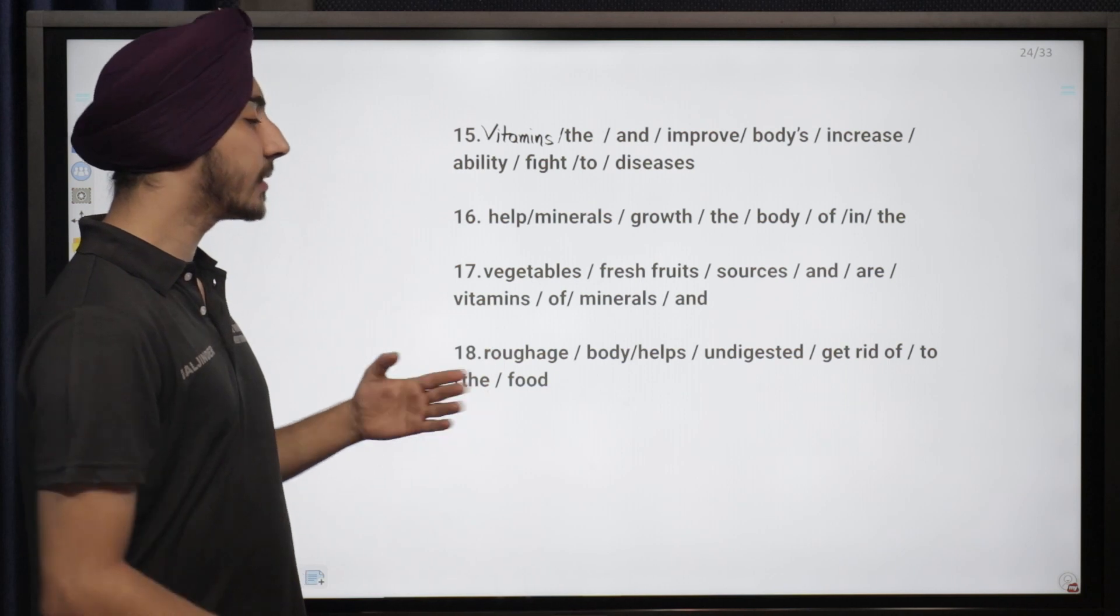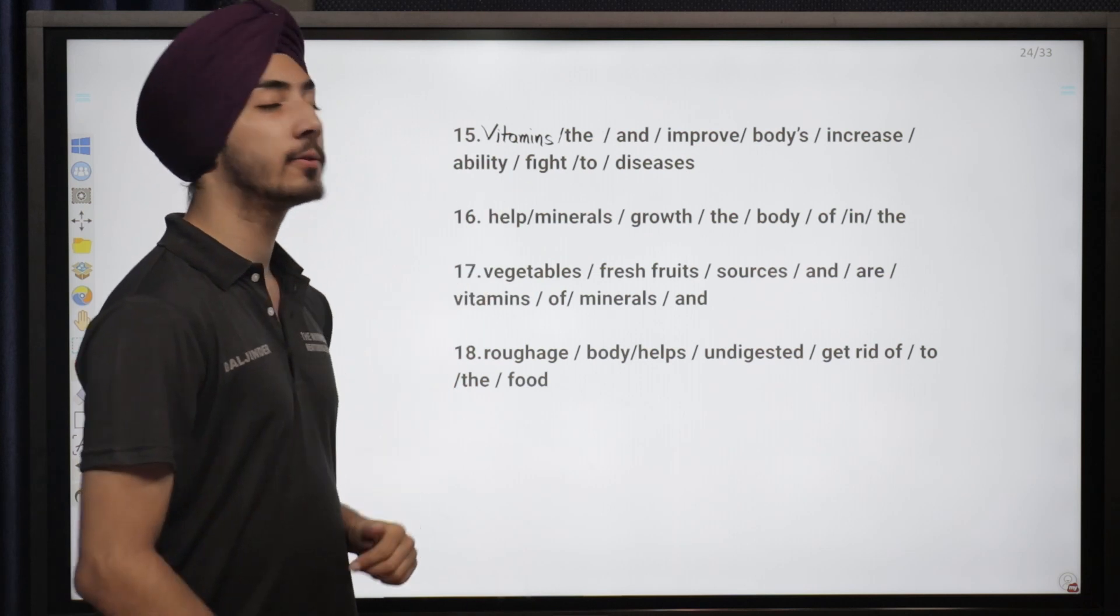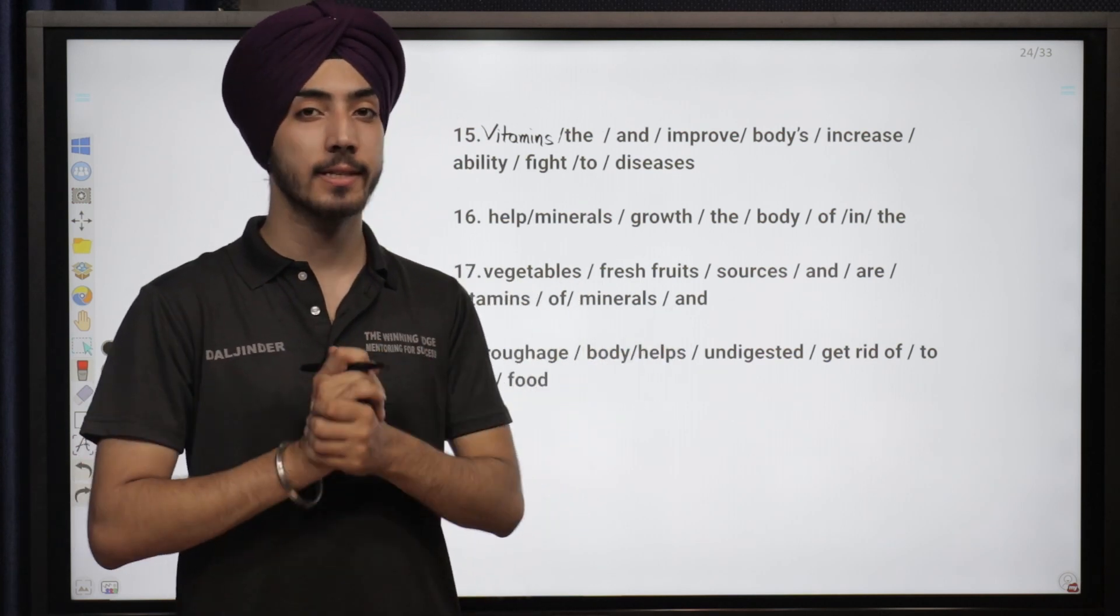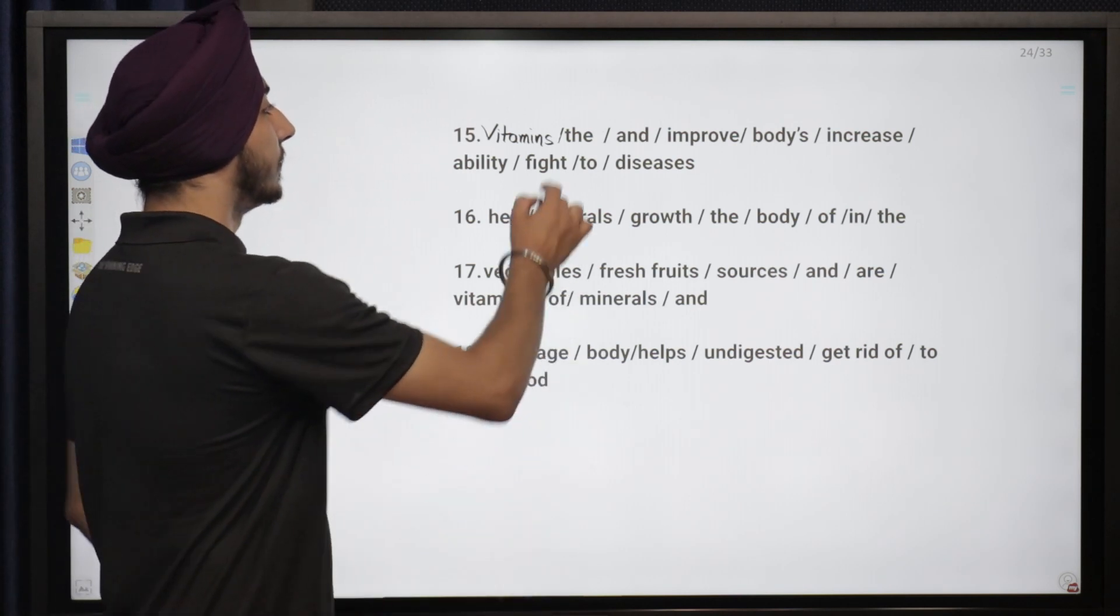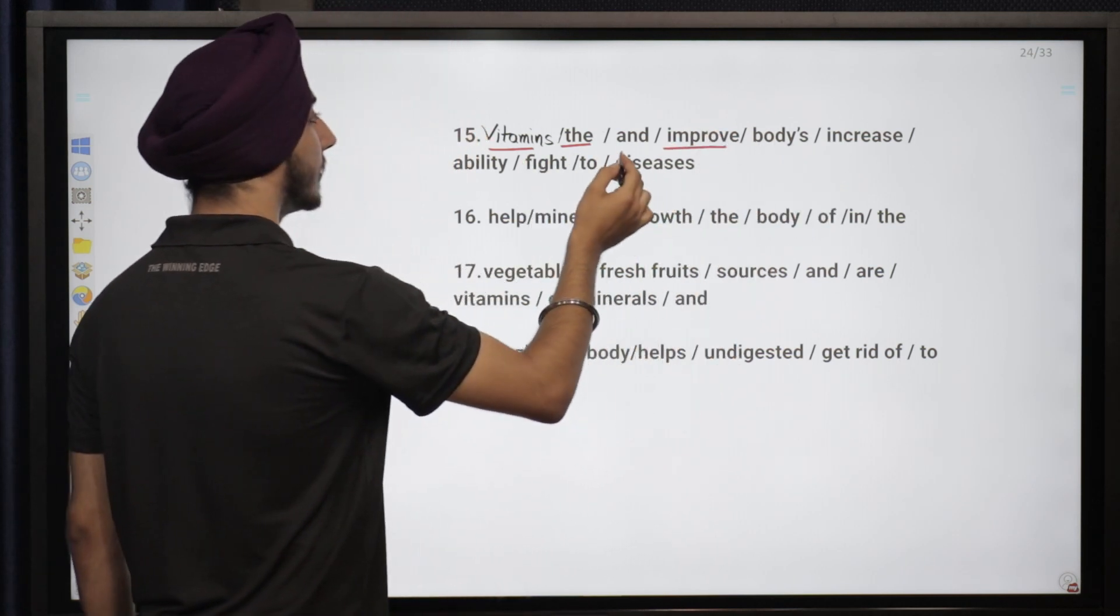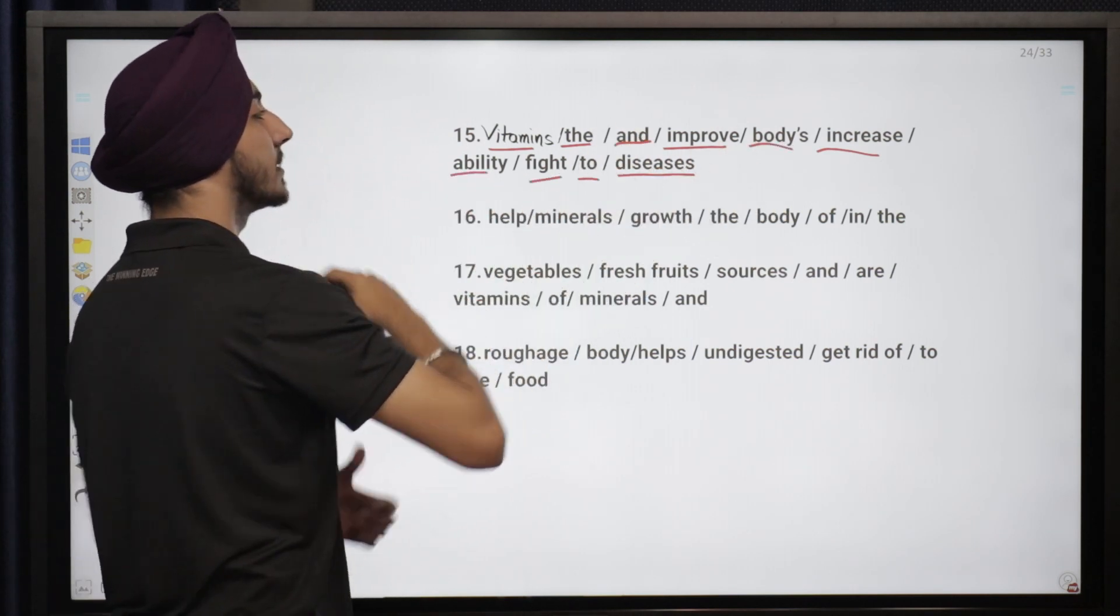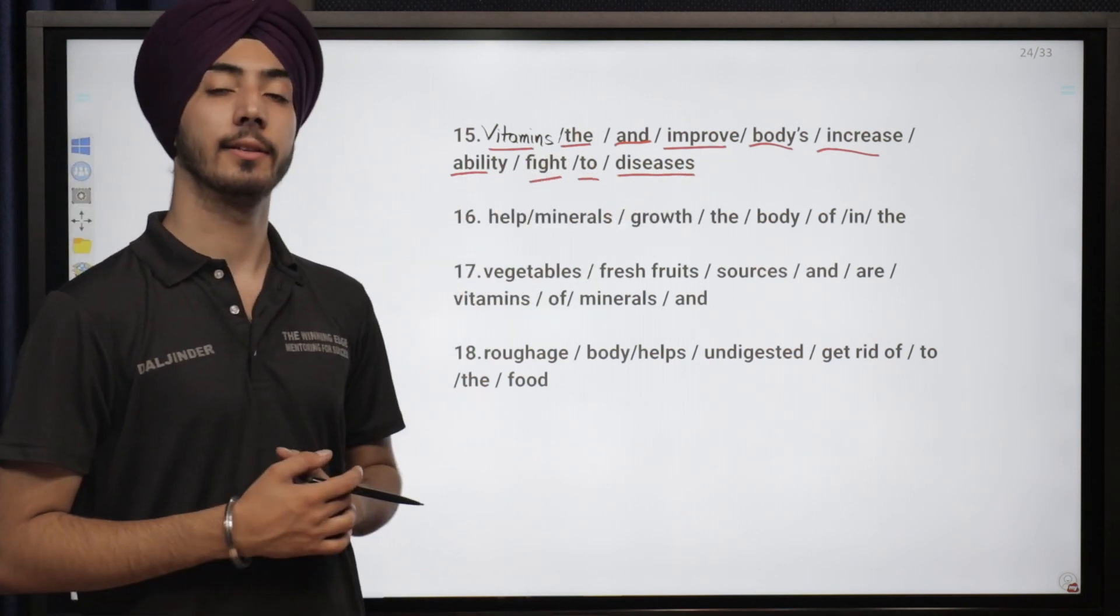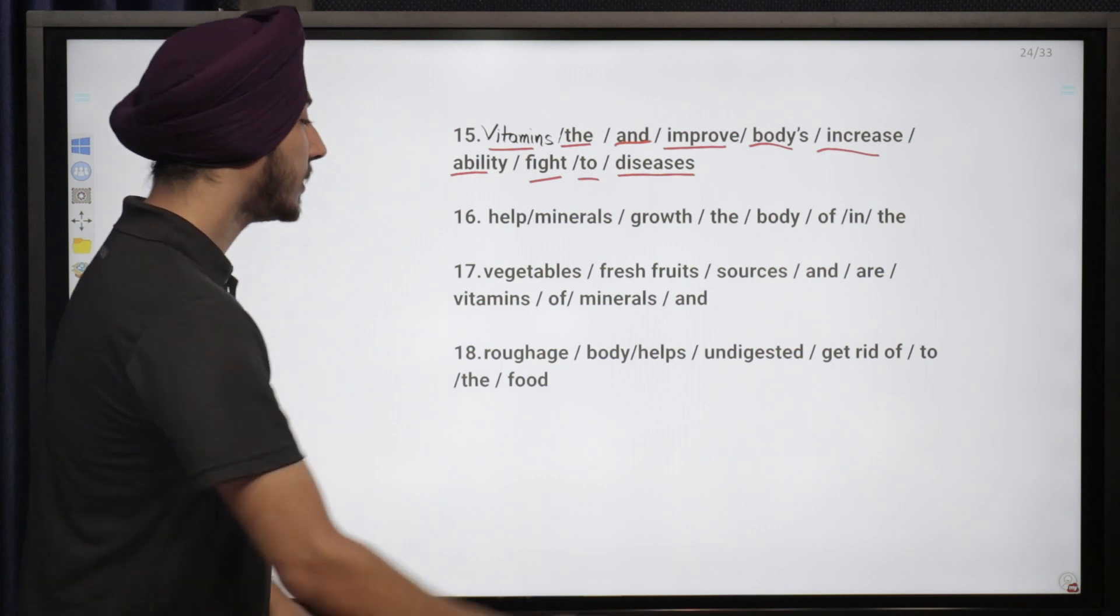Questions 15 to 18 are here on your screen now. Let's look at these sentences: vitamins the and improve body's increase ability fight to diseases. So what can we form of this? The vitamins improve and increase the body's ability to fight diseases. Help minerals growth the body of in the. Minerals help in the growth of the body.